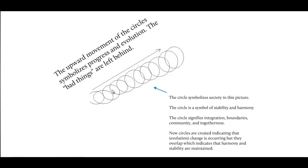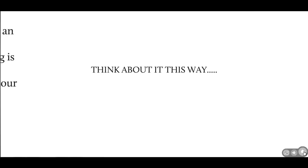The circles symbolize society — stability, harmony, and integration. The circle signifies that society has boundaries, and is a symbol of community and togetherness. Society is pulling together and working together. New circles are created indicating evolution, and they overlap because the old society is continuously being maintained. Society stays the same and is very stable; when it changes, it changes a little bit.